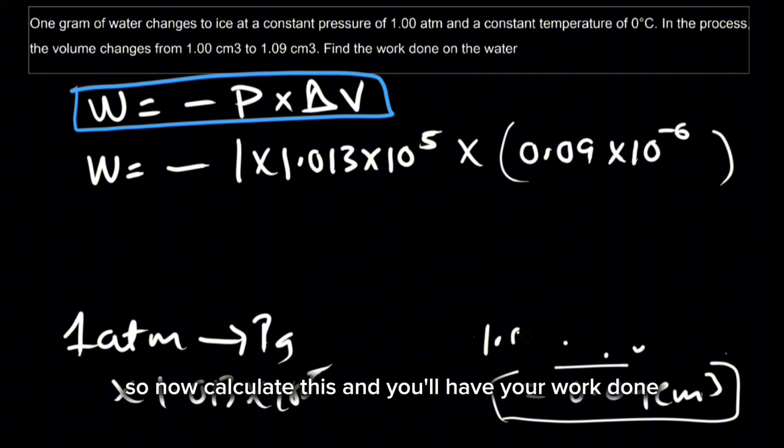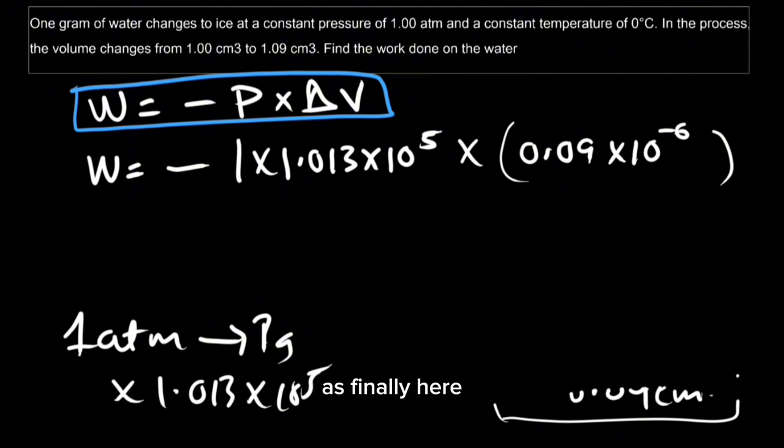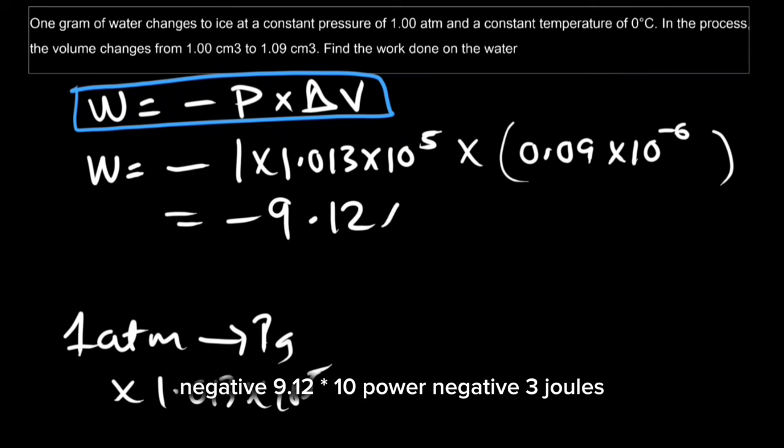So now calculate this and you'll have your work done as finally negative 9.12 times 10 power negative 3 joules.